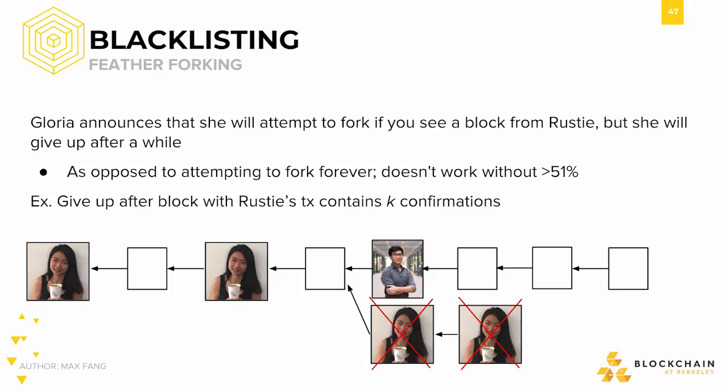Let's review an attack called Feather Forking. Suppose Gloria is a large mining pool. To carry out this attack, Gloria would announce that she'll attempt to fork every time she sees a transaction from me, Rusty.